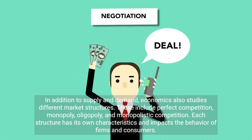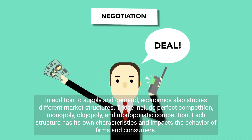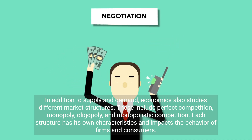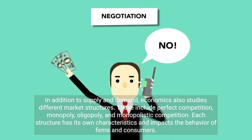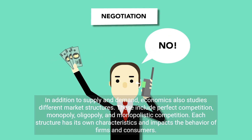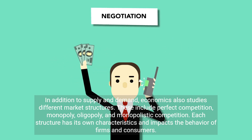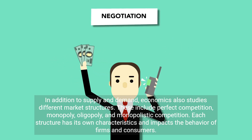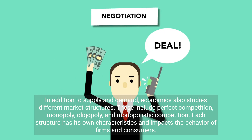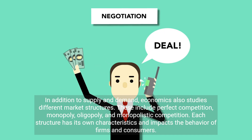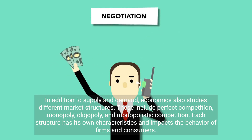In addition to supply and demand, economics also studies different market structures. These include perfect competition, monopoly, oligopoly, and monopolistic competition. Each structure has its own characteristics and impacts the behavior of firms and consumers.